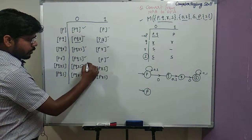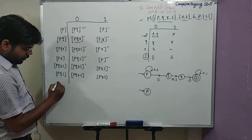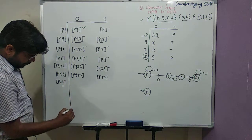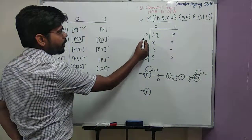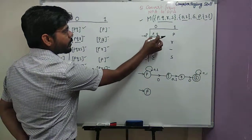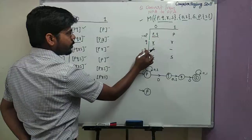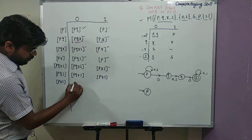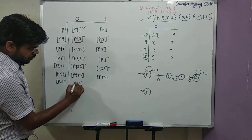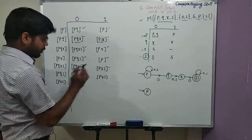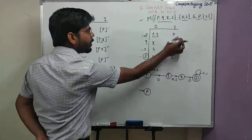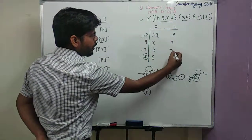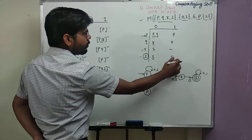State P,R,S: from P on input 0 we get P,Q, from R we get S, and from S we get S, so that gives us P,Q and S. For input 1 from state P,R,S: from P we get P and from S we get S, so we have P and S.